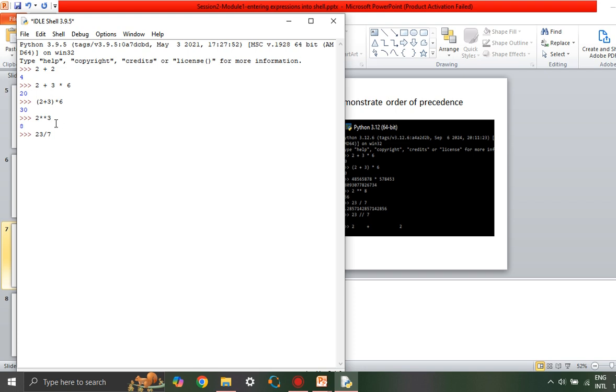23 divided by 7. You are dividing 23 by 7, it should not be rounded off, so you get 3.285. If you want the quotient to be rounded off, give double slash 7. You get the value rounded off to the integer value, which is 3. If you want to see the remainder, give the modulus operator.